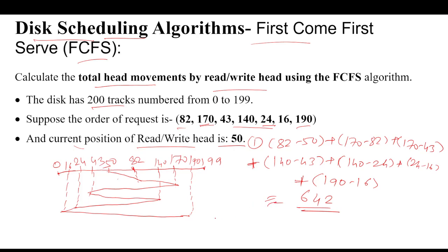Next method is very simple. We consider one direction. Initially our current position was 50 and last position in one direction is 170. That's 170 minus 50. Plus the second direction, 170 to 43, that means 170 minus 43. Plus 43 to 140, so 140 minus 43.